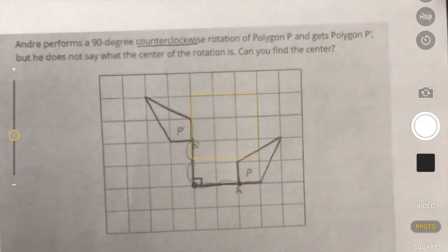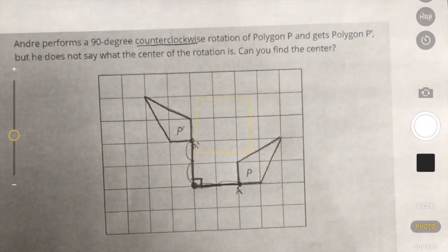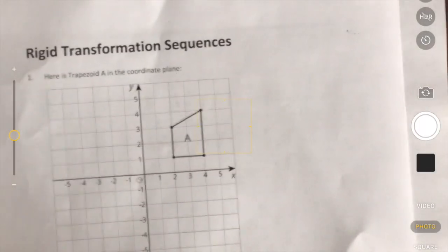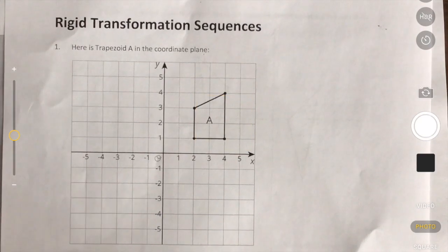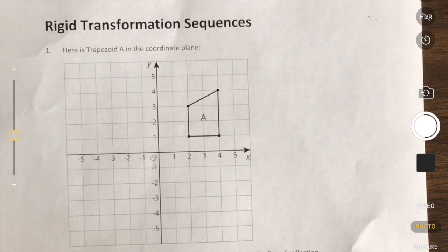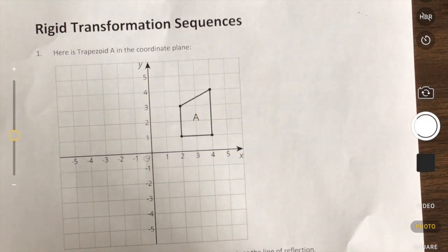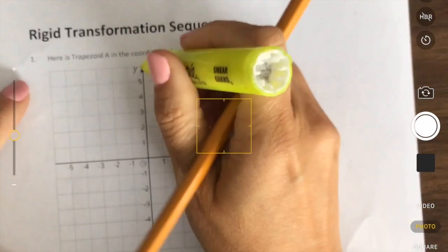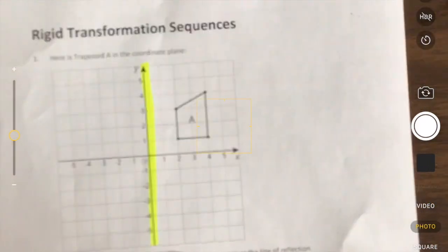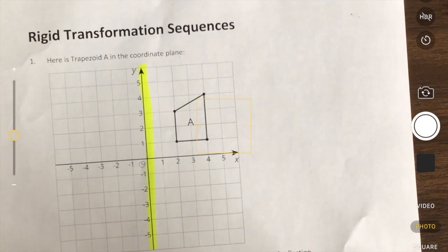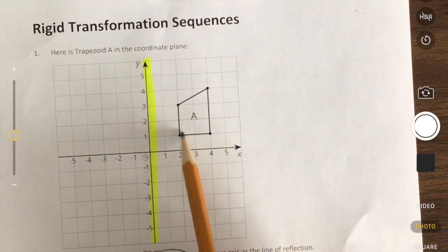In sequencing, we have to make sure that our order matters because that can be a big difference. We're going to look at number one here in your practice sheet. We have a trapezoid A in the coordinate plane, and it says to draw polygon B, which will be the image of A, using the Y axis as a line of reflection. So I'm going to highlight my Y axis so we make sure we know what we're doing. When we're talking about reflection, we've got to think about going across, and every point has to be done.